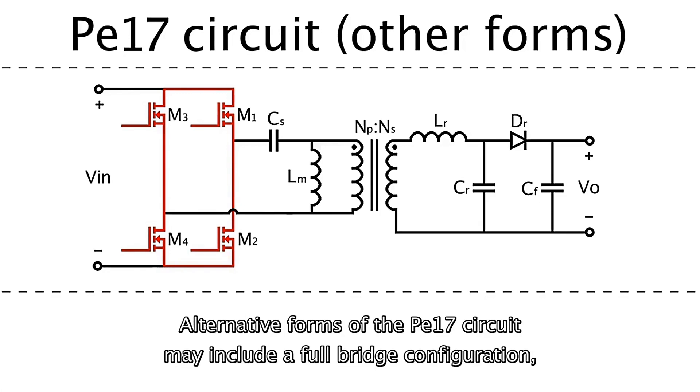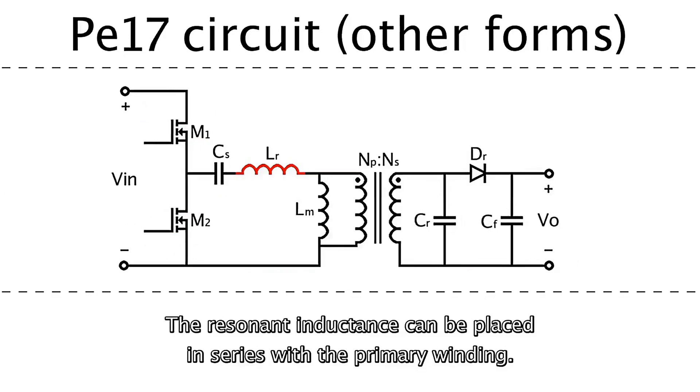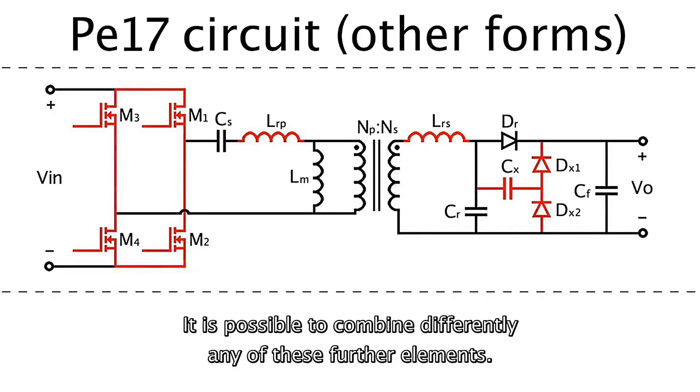Alternative forms of the PE-17 circuit may include a full-bridge configuration or a voltage-doubling rectifier circuit. The resonant inductance can be placed in series with the primary winding. It is possible to combine differently any of these further elements.